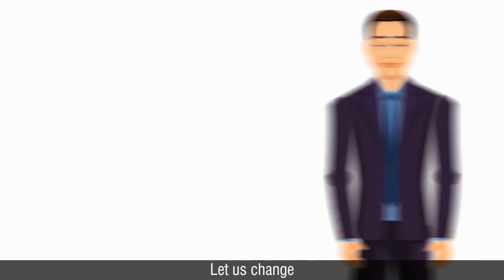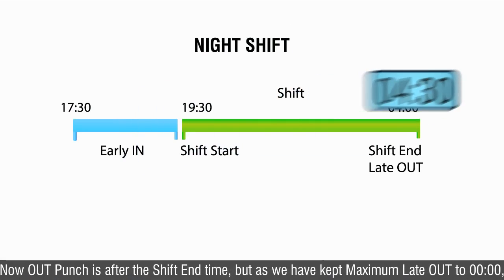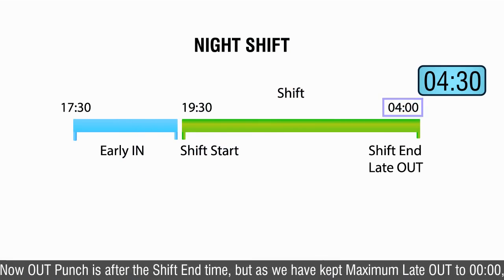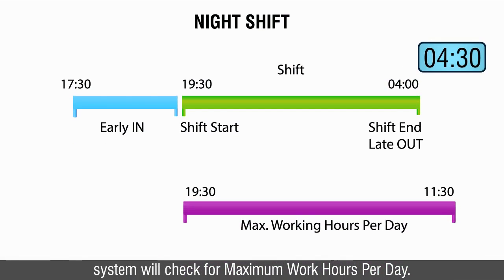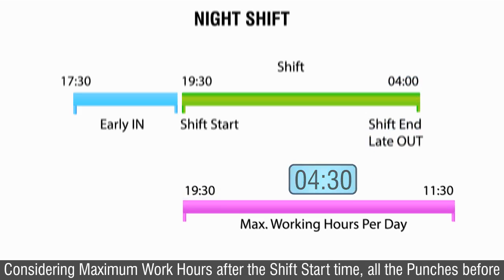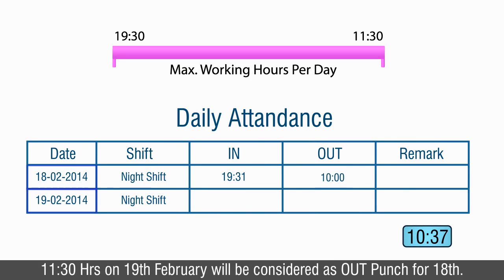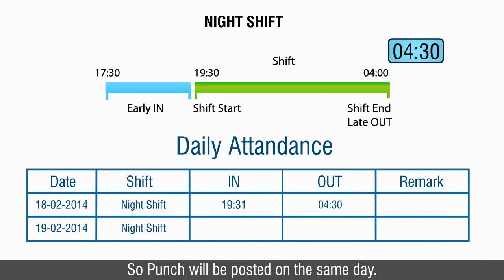Scenario 2: Let us change maximum late out allowed to 0 hours, keeping other parameters as they are. Now the out punch is after the shift end time, but as we have kept maximum late out to 0, the system will check for maximum work hours per day. Considering maximum work hours after the shift start time, all punches before 1130 hours on 19th February will be considered as out punch for the 18th. So the punch will be posted on the same day.